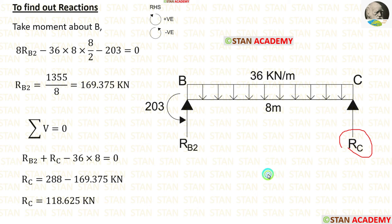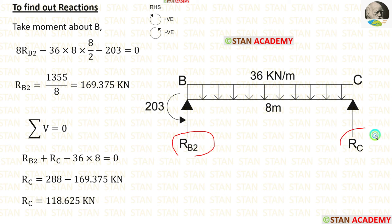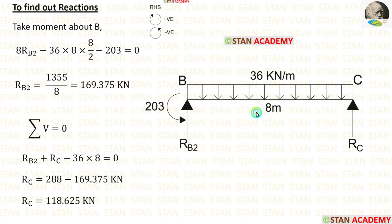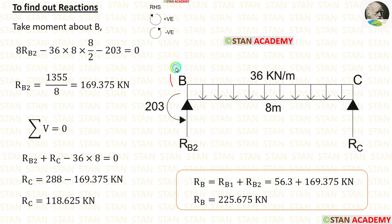Now let us calculate RC. For that, let us apply the rule: summation of vertical forces equals 0. In this span, we are having three vertical forces: RB2, RC, and UDL. RB2 and RC are acting upwards, so they are positive. The UDL is acting downwards, so it is negative. For the UDL, we multiply with the distance to get the total load. RB2 we have already calculated. Finally, we are getting RC. We have calculated the reaction at point B two times, so we have to add them. After adding, we are getting RB equal to 225.675 kN.